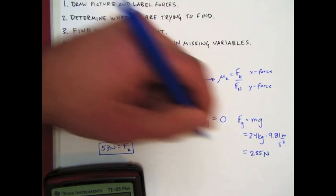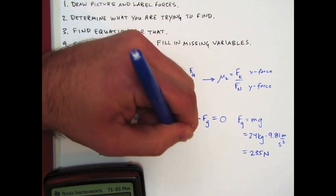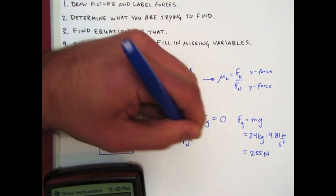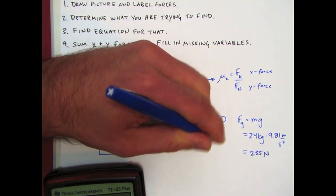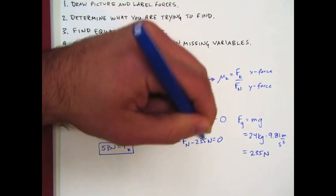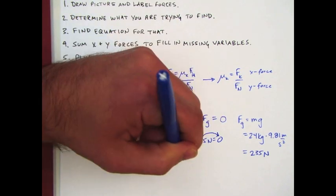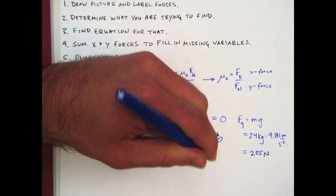Now I know that the force of gravity is 235 newtons so I'll plug that into my equation. The normal force minus 235 newtons equals zero. Well let's do the same thing that we did over here. I'm going to move this over and I have my normal force 235 newtons.